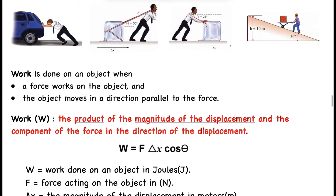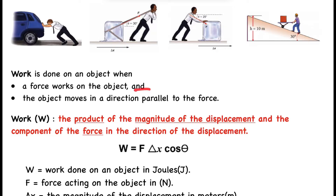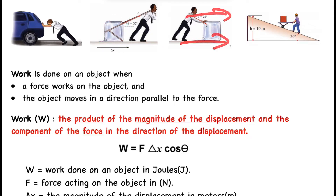So what is work? Work is done on an object when a force acts on it — like a pushing force or a pulling force. That's one requirement. The second requirement is that the object moves in the direction parallel to the force. If the force is in a given direction and the object is displaced in that same direction, work has been done. These are the two requirements for work.